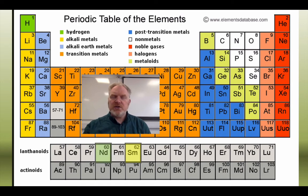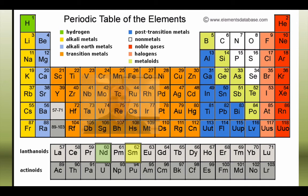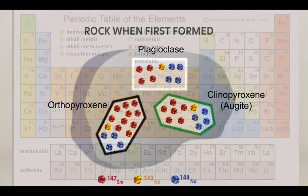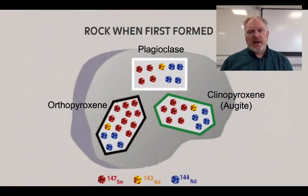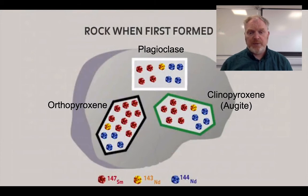So we don't find a lot of these elements within a mineral, but we can find trace amounts, and we can use those to work out the age of the rock that they're found in. The way this works is by looking at the ratios of different isotopes: 147 Samarium, 143 Neodymium, and 144 Neodymium.